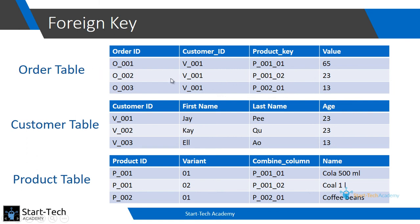We can use these keys to import additional information from our customer table and product table by directly matching the customer ID of the order table with the customer ID of the customer table, and the product key of our order table with the combined column key of our product table. So customer ID and product key are the foreign keys of our order table. In short, we can say that the primary keys of other tables are the foreign keys of the given table — this is generally true in most cases.